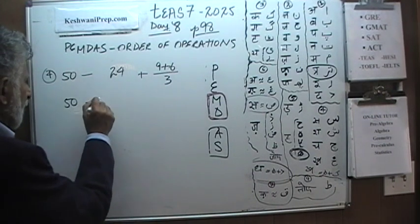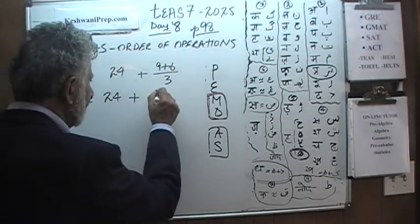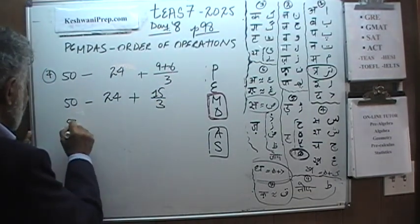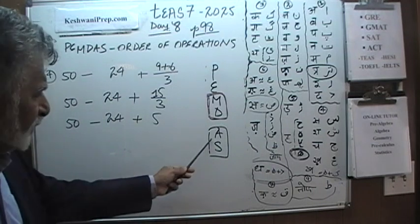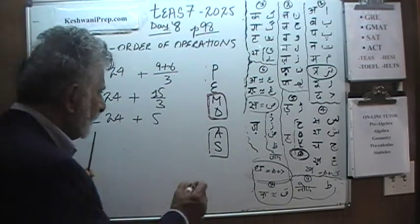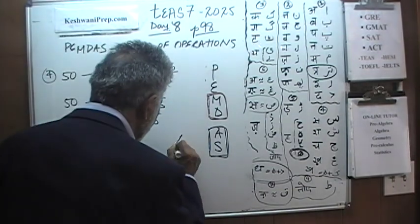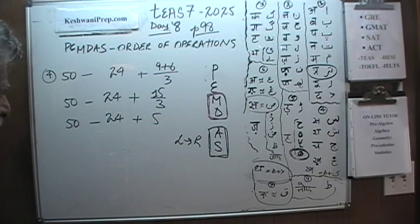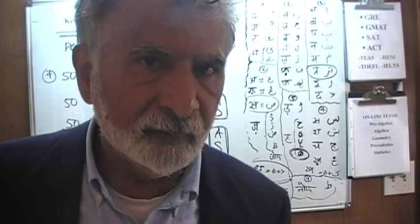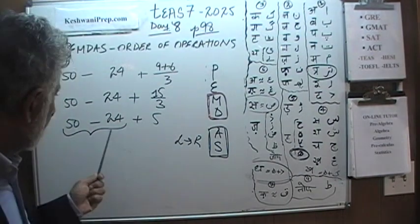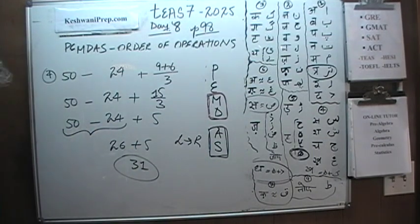So the problem becomes 50 minus 24 plus 9 plus 6 divided by 3. We handle 6 over 3 first: that gives us 5. So we have 50 minus 24 plus 5. Addition and subtraction have the same priority, so we strictly move left to right. 50 minus 24 is 26 — because 50 minus 25 would be 25, so 50 minus 24 is one more, which is 26. Then 26 plus 5 is 31. Answer number 4 is 31.